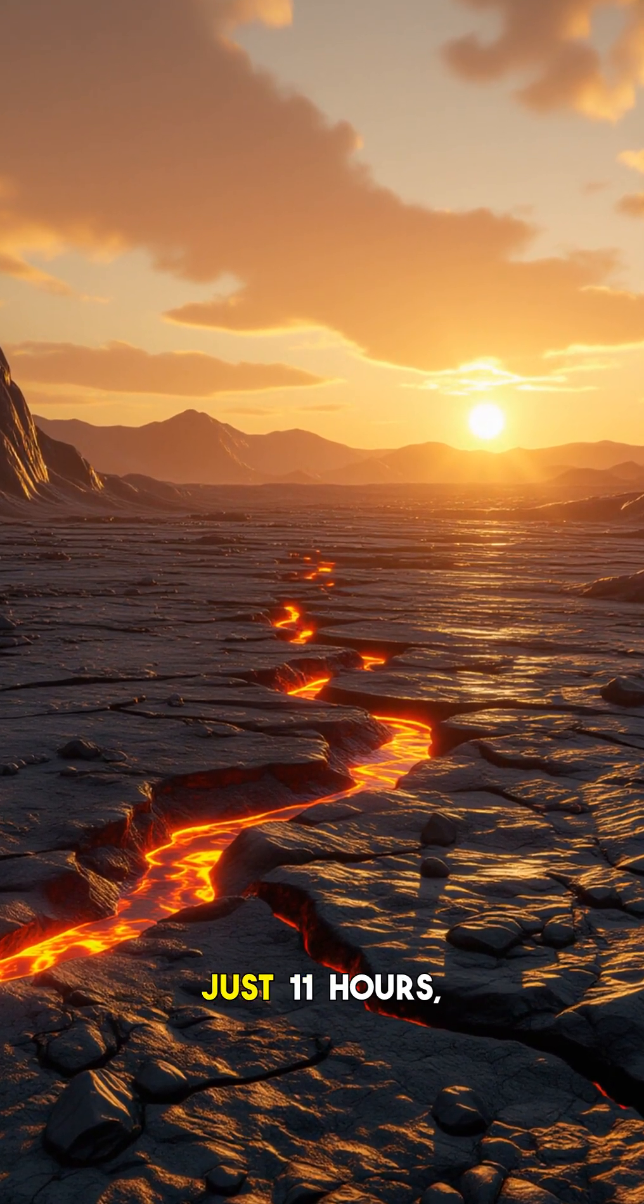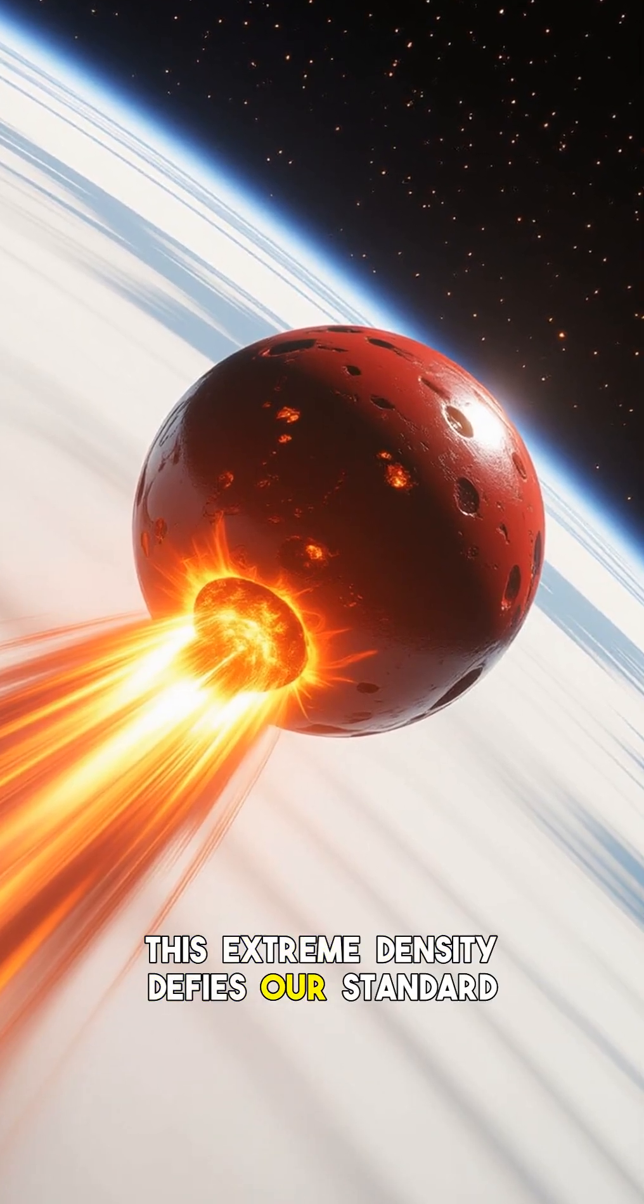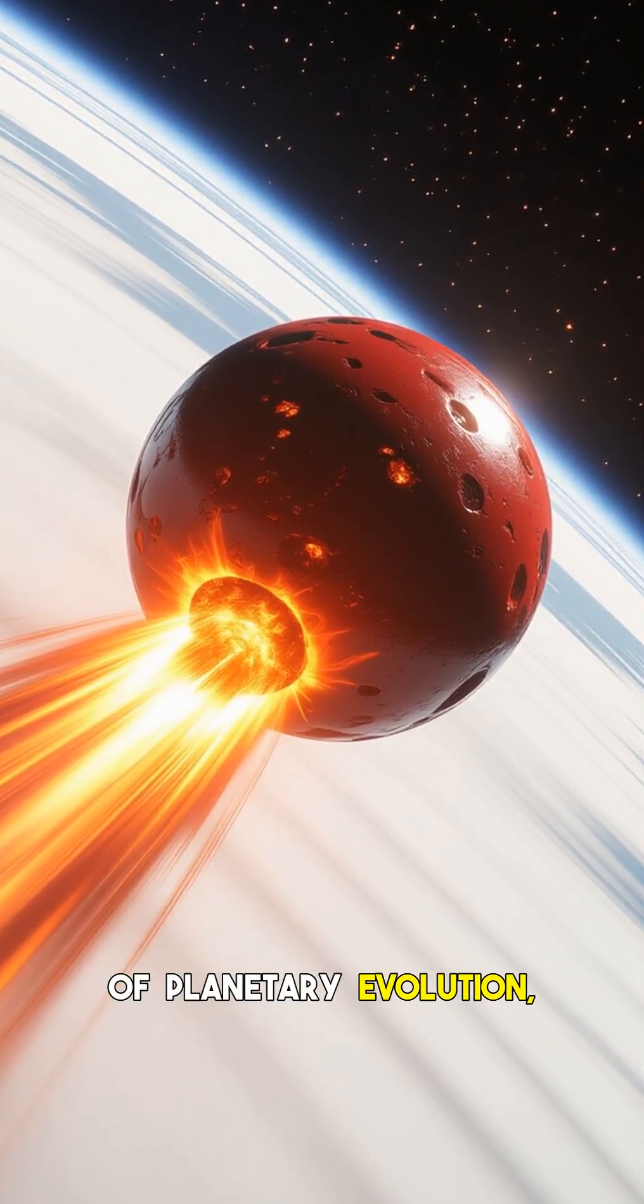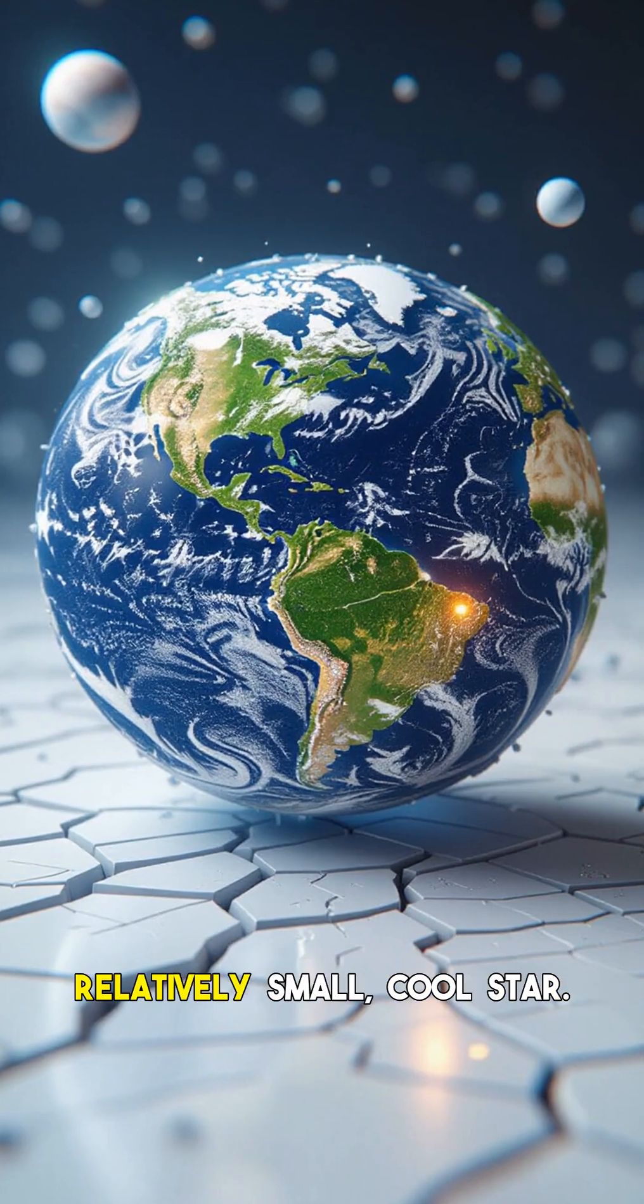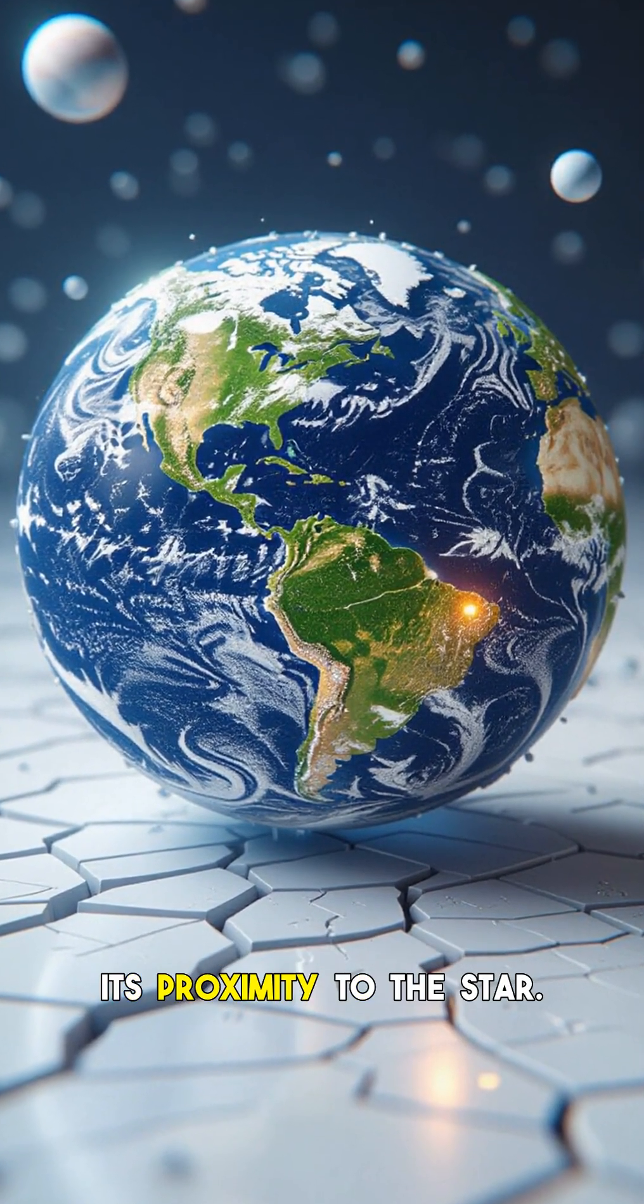It zips around its star in just 11 hours, making it intensely hot. Its extreme density defies our standard models of planetary evolution, especially for a world orbiting a relatively small, cool star.